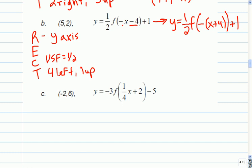So RECT, there's a y-axis reflection. I have a vertical compression, so the VSF equals 1/2, and I move 4 left and 1 up. So this point will go from (5, 2) to (-5, 2). Then it will go (-5, 1), and (-9, 2).